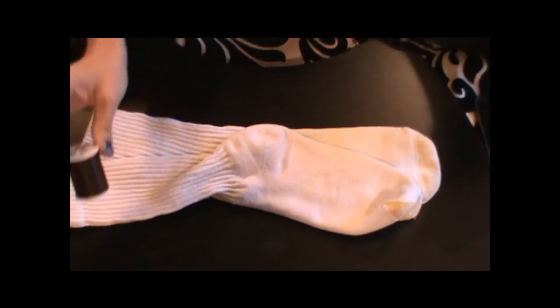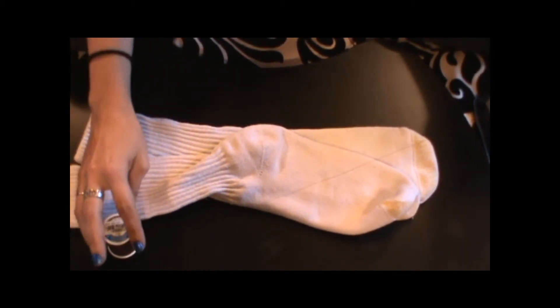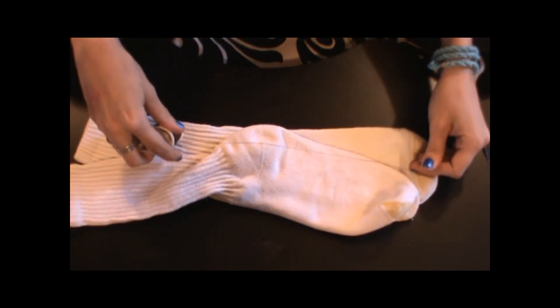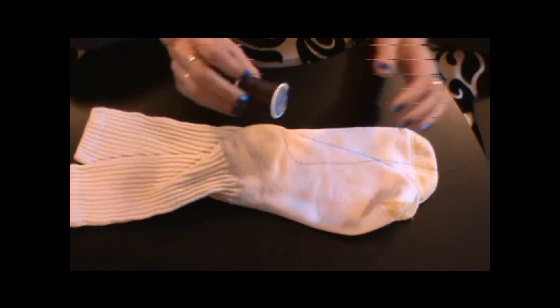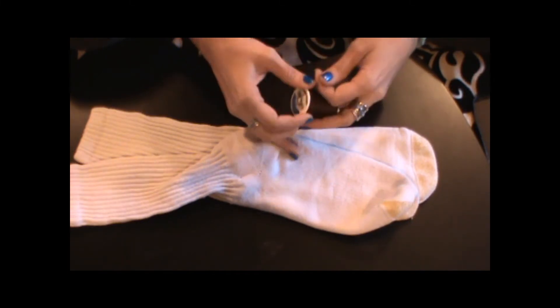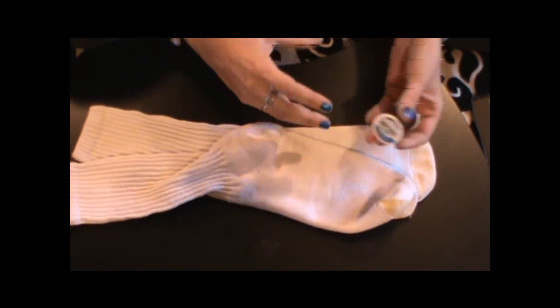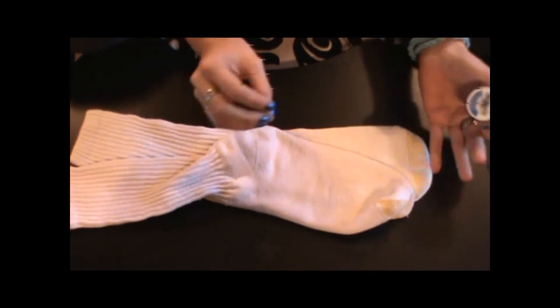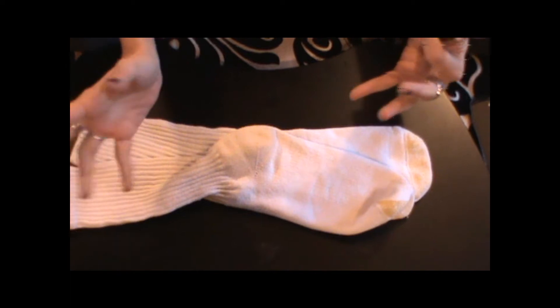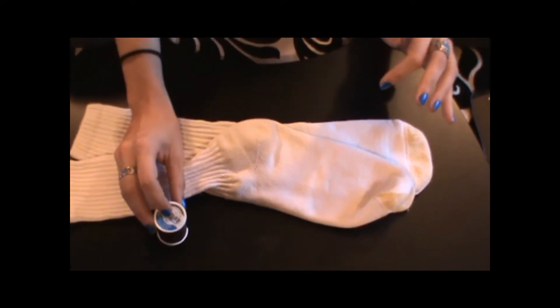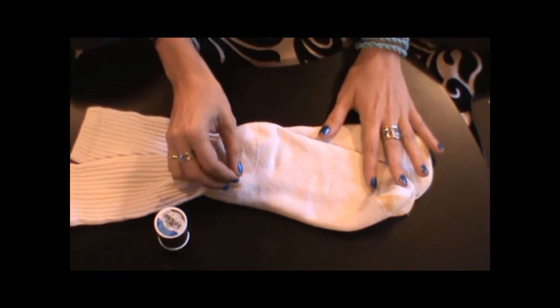Then you definitely need to have some thread - this is a bobbin, you can also call it a spool or spindle, it's fine. Use a color that you choose. I'm using black on white so that you can see it better. Most of the time when you're sewing, you'll pick - if you're using white fabric, you'll use white. If you're using orange fabric, you can use orange, or if you want to be creative, you can have a complementary color, such as orange socks and a blue thread.